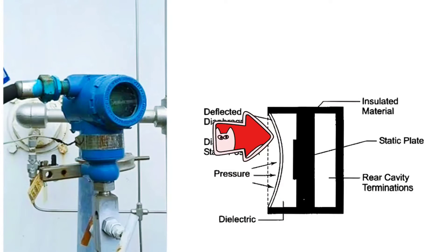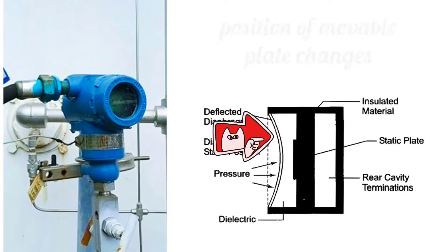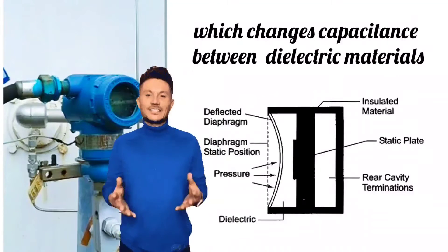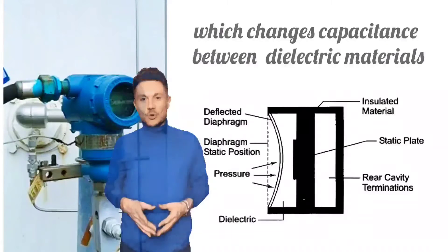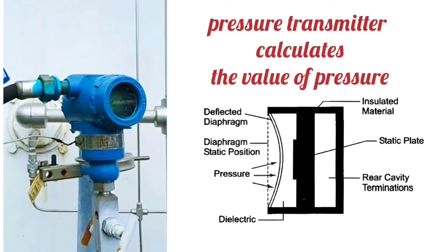When the pressure is changed, the position of the movable plate changes, which changes the capacitance between the dielectric materials. By measuring this capacitance change, the pressure transmitter calculates the value of pressure.